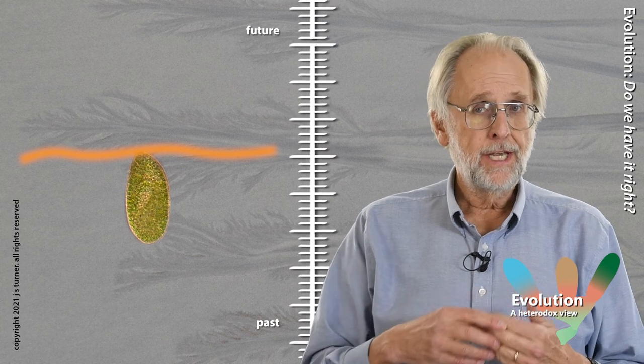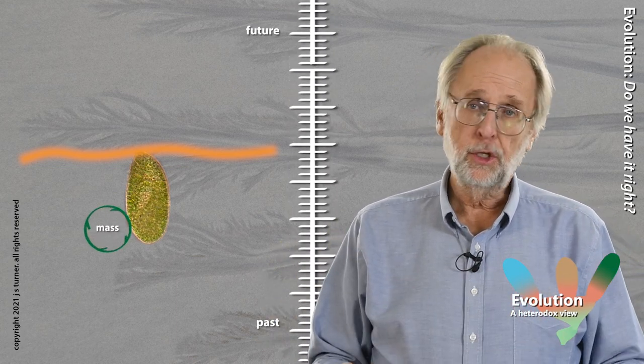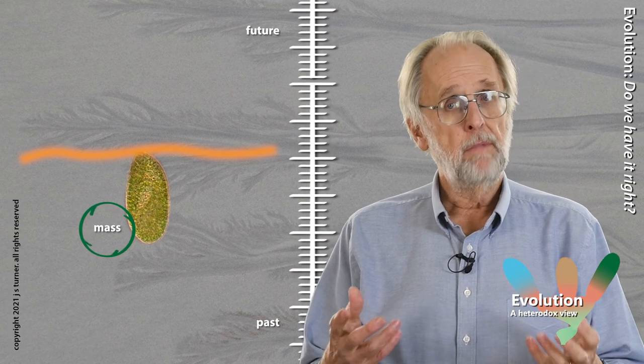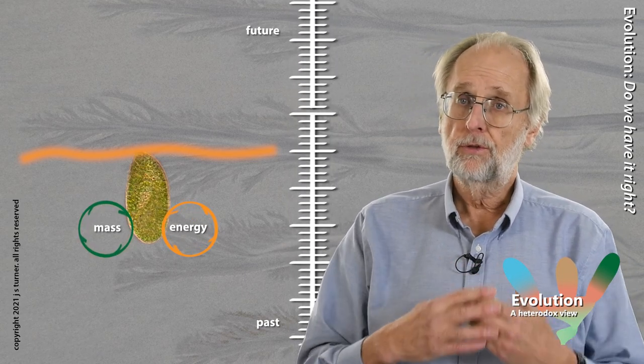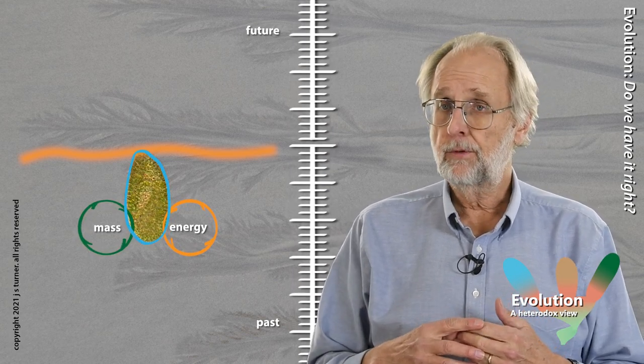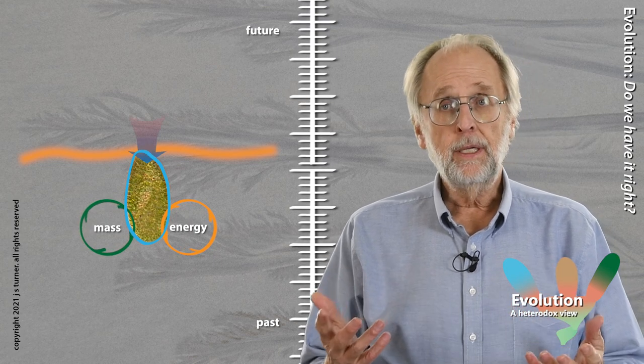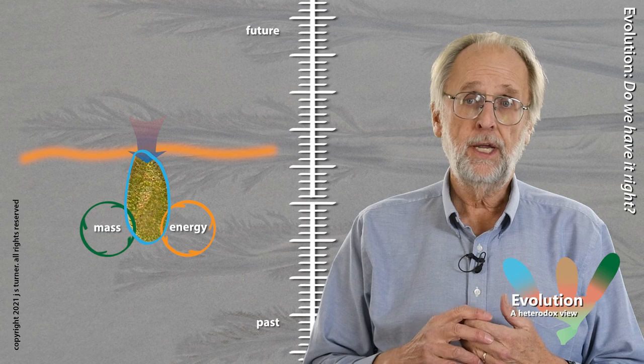We're just riding along through time with the paramecium. The paramecium is a thermodynamic engine. Matter is continually circulating through the paramecium, as is energy, ensuring that the paramecium persists through time. And this is all managed by an adaptive boundary, which takes in information and mediates the cycling rate of matter and energy as circumstances change.